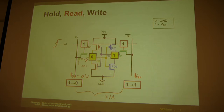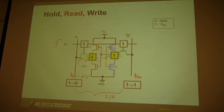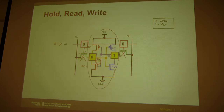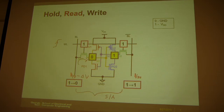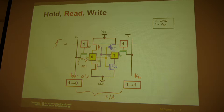A student asks whether N1 and N2 can ever both be zero or both be one. The instructor confirms that N1 and N2 are always complementary — they can be (zero, one) or (one, zero), never (zero, zero) or (one, one).